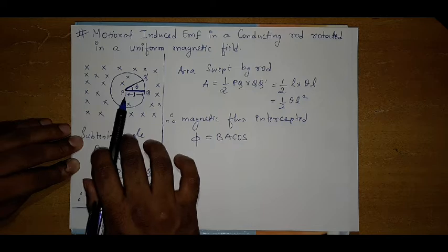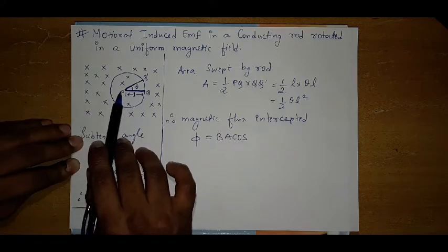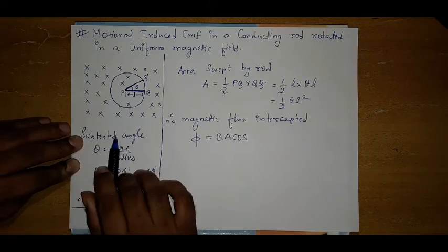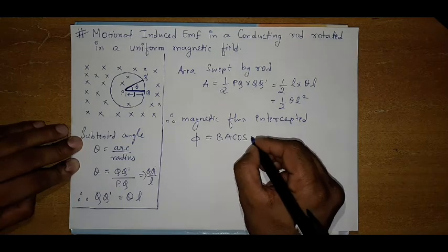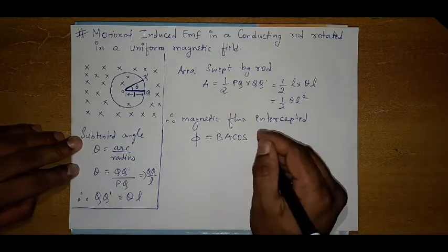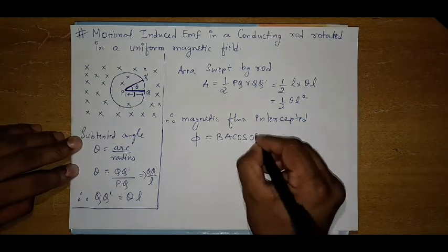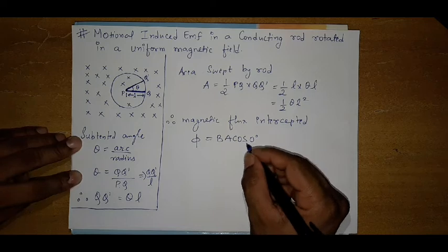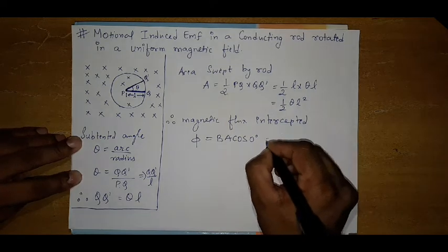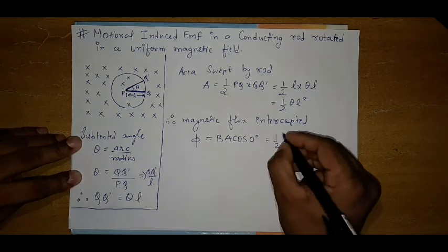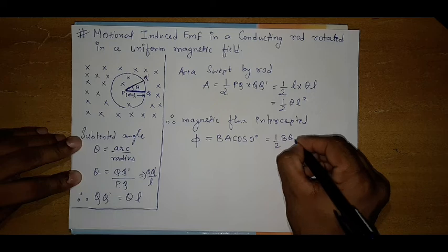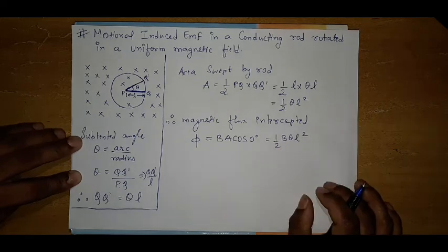We find the area vector is going into the surface and the magnetic field is also going into the surface. So the angle between area vector and magnetic field is 0 degree. So cos 0 we know is 1. So further this equation becomes half into B into theta L square.